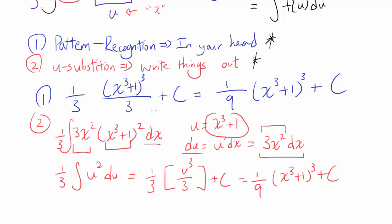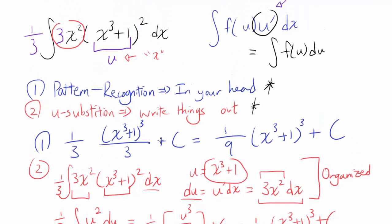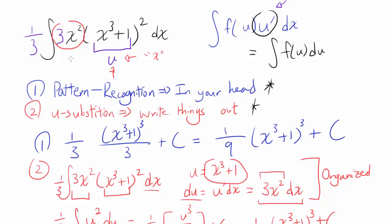Hopefully you realize we are basically doing the same thing. With u substitution, we are more organized and concise, and writing things out makes it easy to see what's going on. With pattern recognition, you say: this is u, so let's make this u prime — once you have that, you can ignore it, and something squared becomes something cubed over 3. So pattern recognition is faster and you can do it in your head. I recommend trying both, depending on the difficulty of the problem and how much practice you've had.